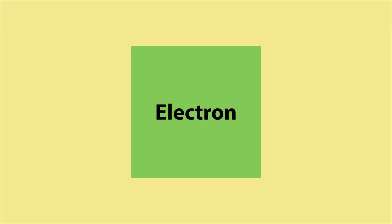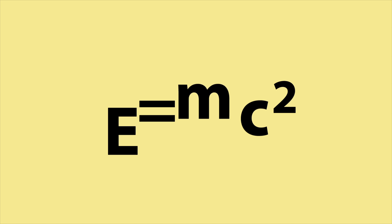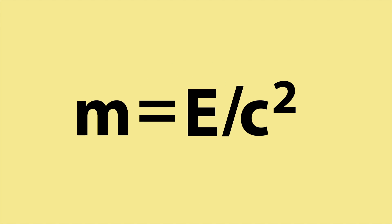But the mass is just energy. We can show this by using the famous equation created by Albert Einstein, E equals mc squared, or energy equals mass times the speed of light squared. And by rearranging this, we can find that mass equals energy divided by the speed of light squared.